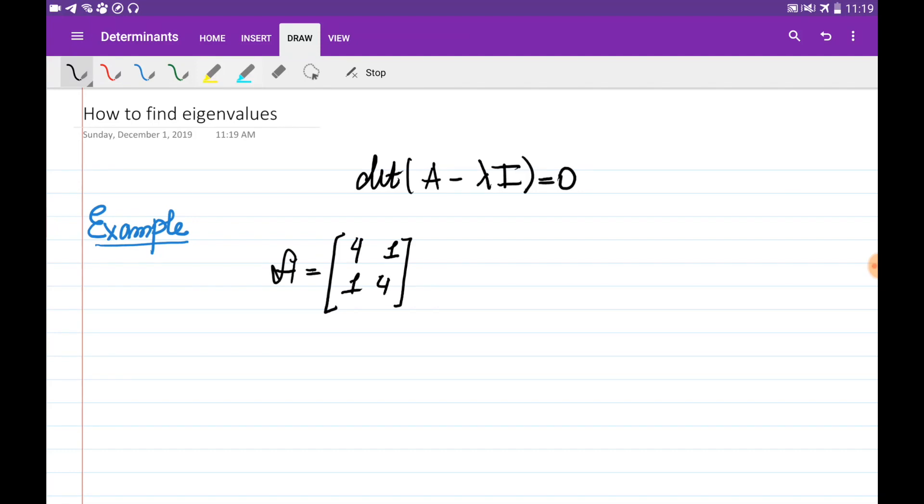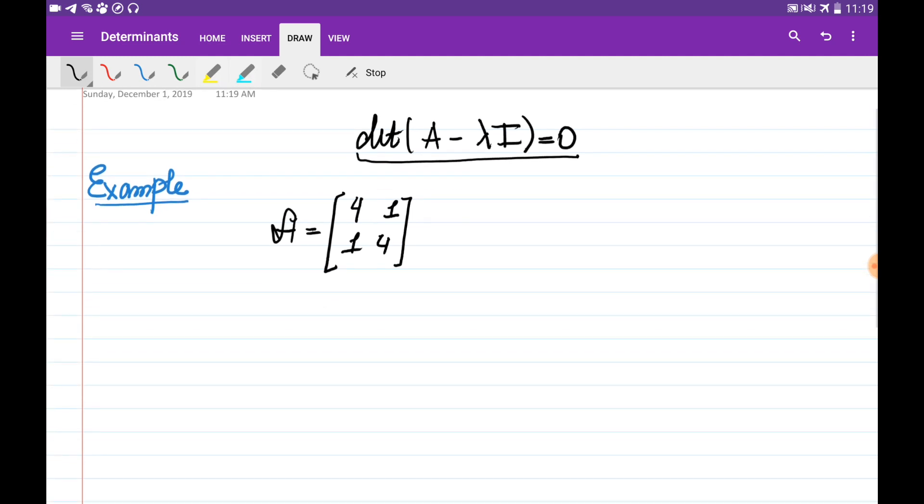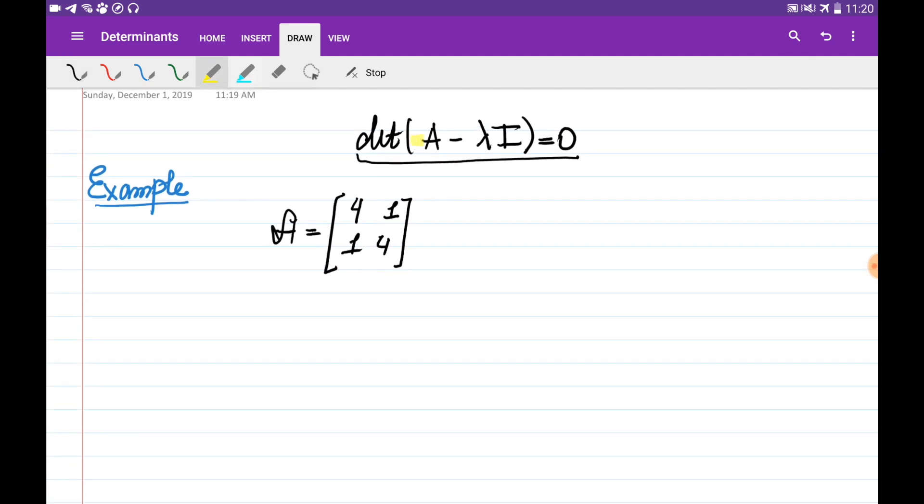When we are given a t by t matrix, we can find its eigenvalues by solving the characteristic equation. Let's construct this equation. First, we need to find this matrix.